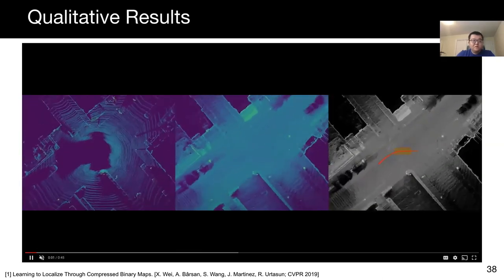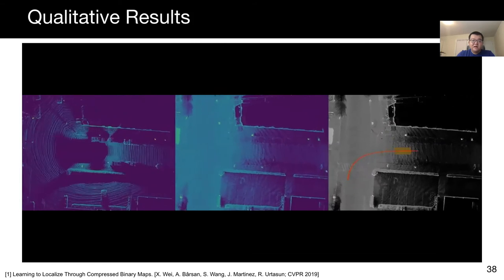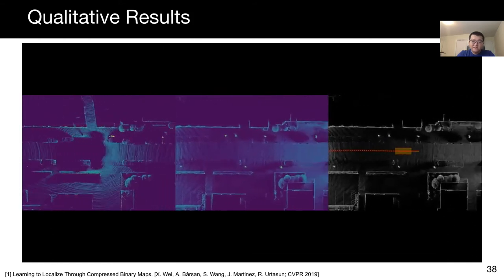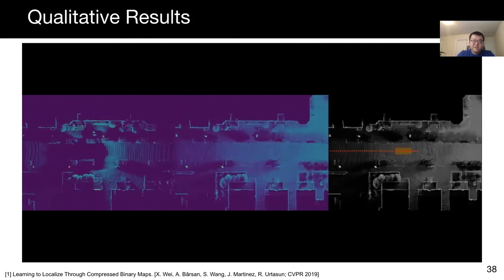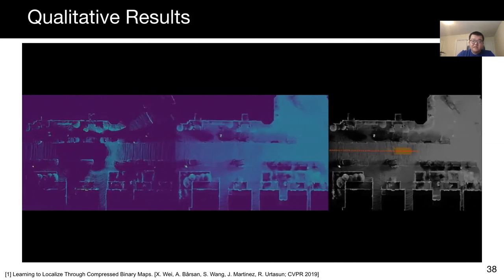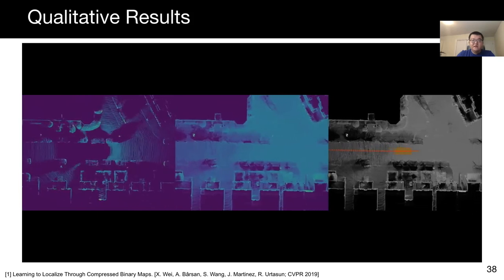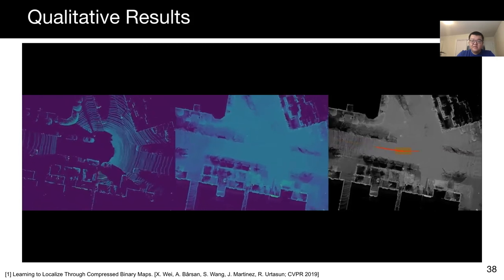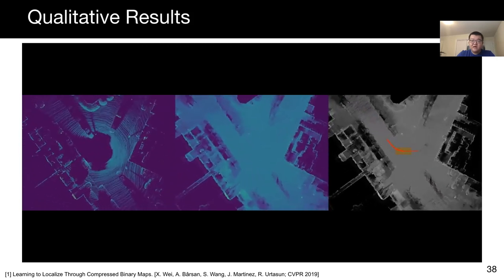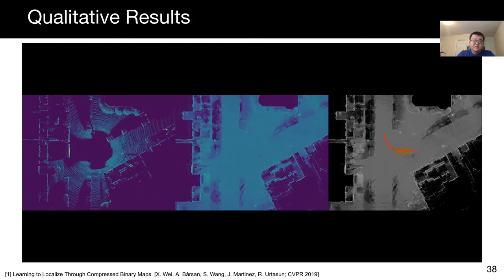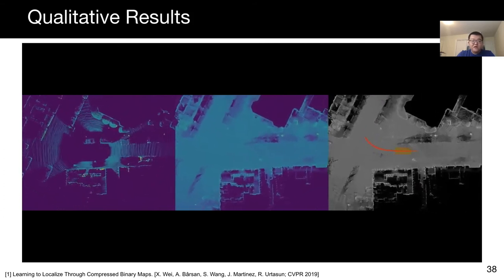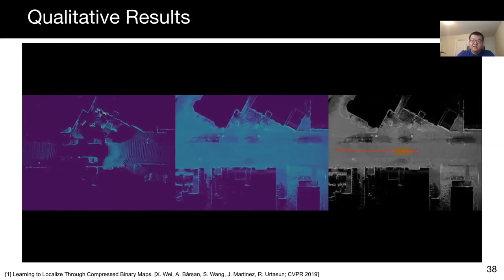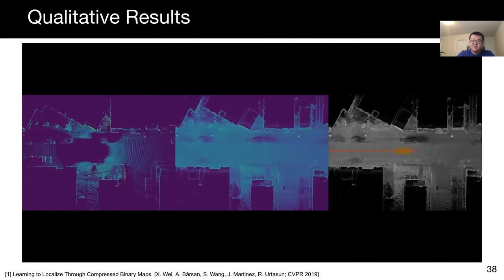Here, we show some qualitative results. On the left is our online LiDAR, in the middle is the map, and on the right is our localization results. Vehicle pose predicted by our method is in red, and ground truth is in green. Note that in these cases, we can see that our pose and the ground truth pose are almost perfectly aligned. I will now hand it over to Julieta to talk about global localization and the importance of high-quality large-scale datasets for evaluating localization approaches.